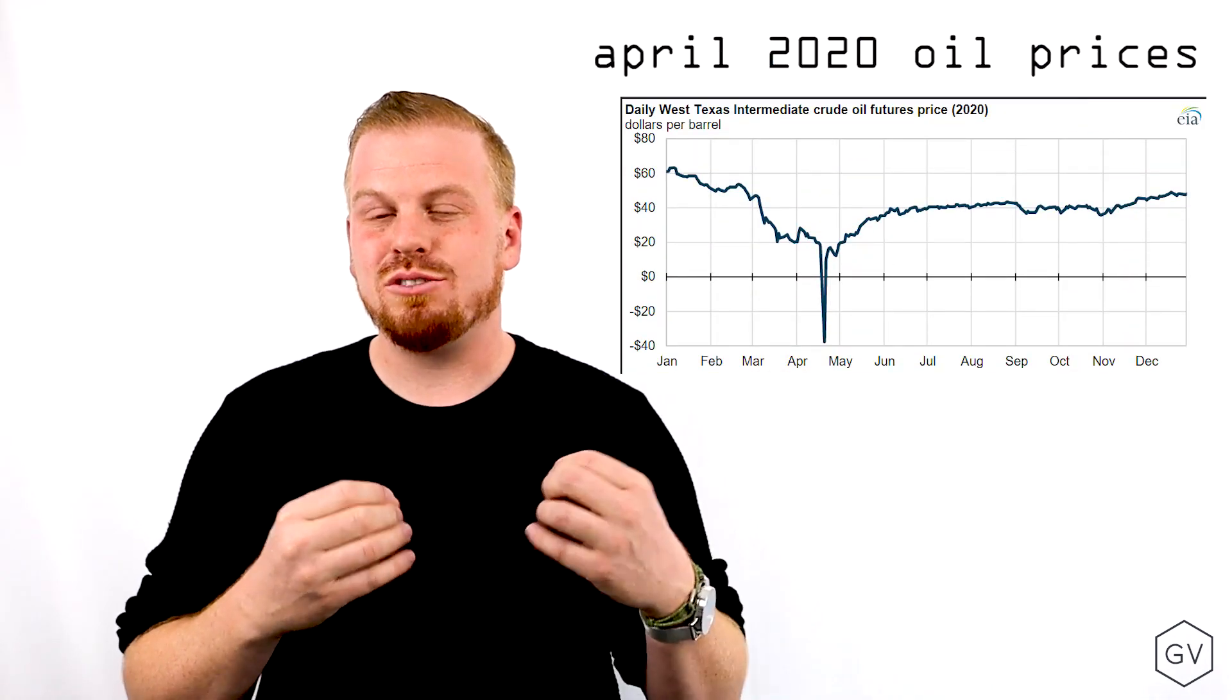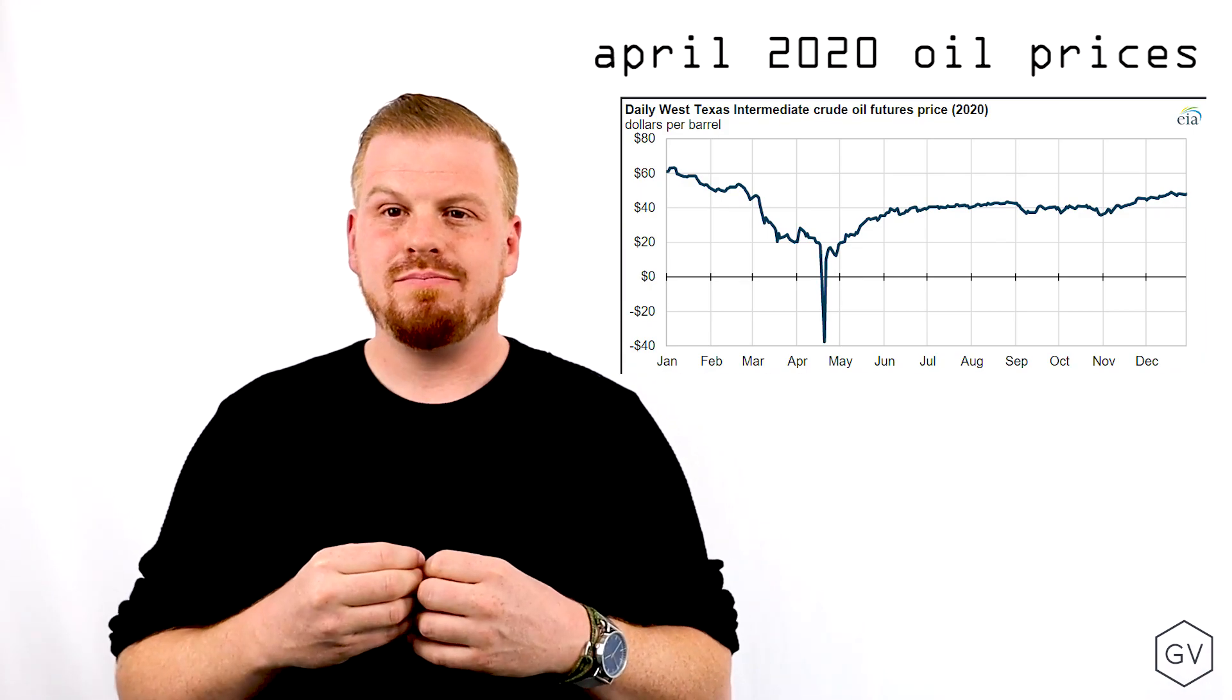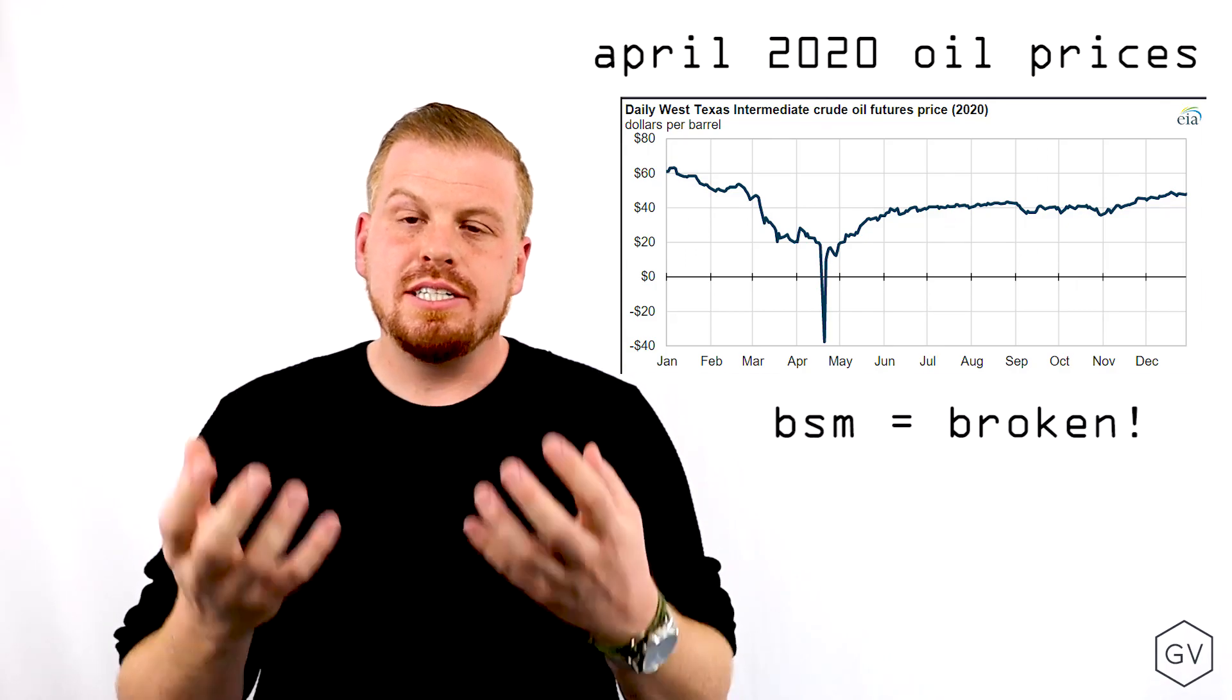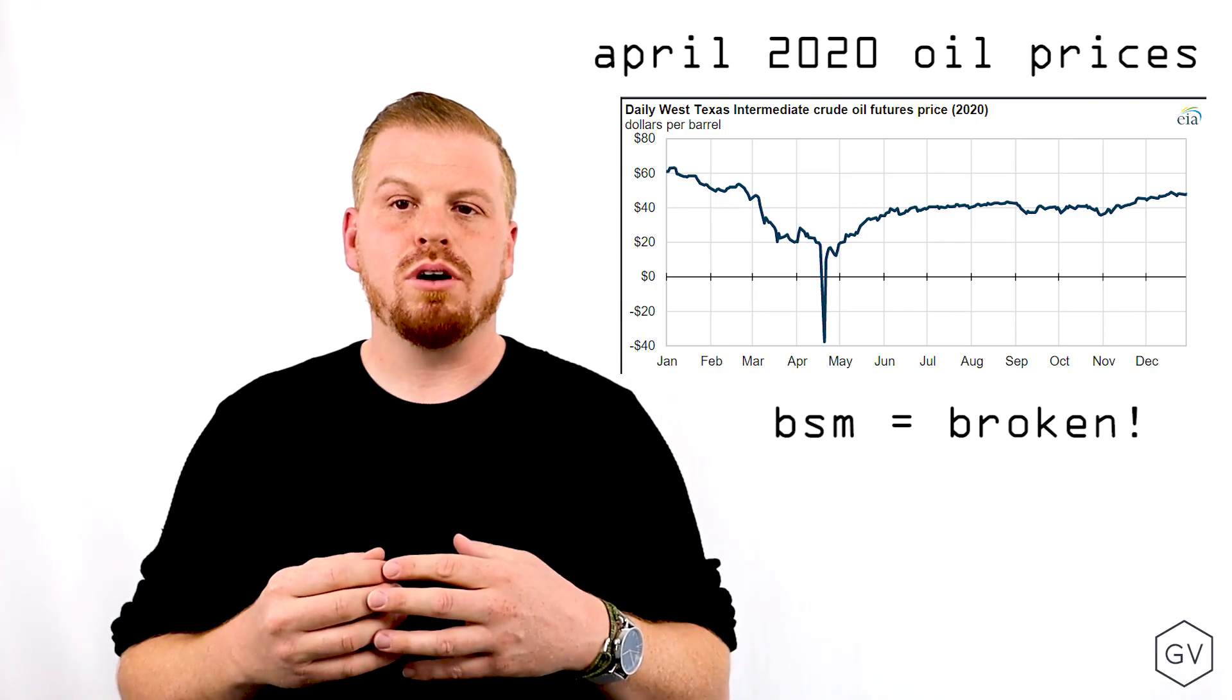But technically speaking, I've seen implied volatility go to infinity. Now, what do I mean by that? Well, if you remember that April 2020, when oil prices went negative, the Black-Scholes model broke. Continuously compounded returns to the downside wasn't a reasonable assumption anymore.